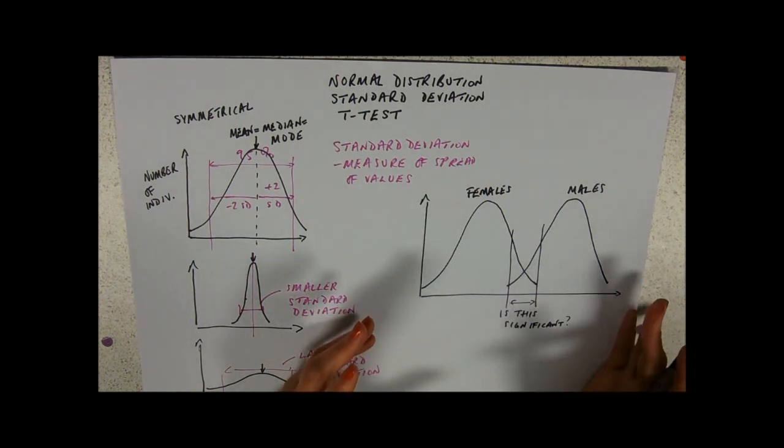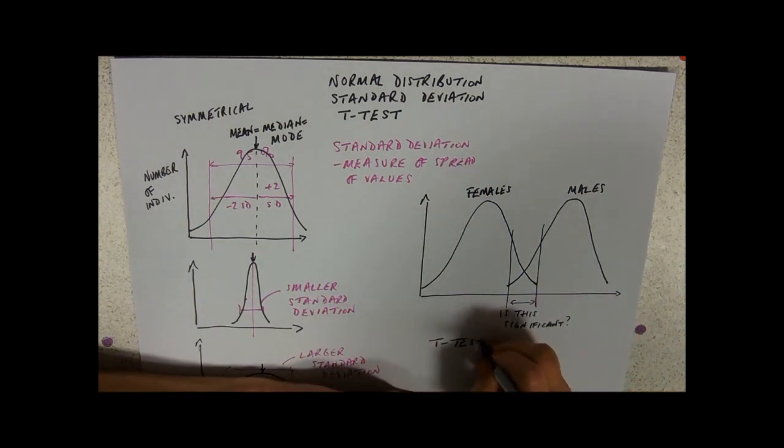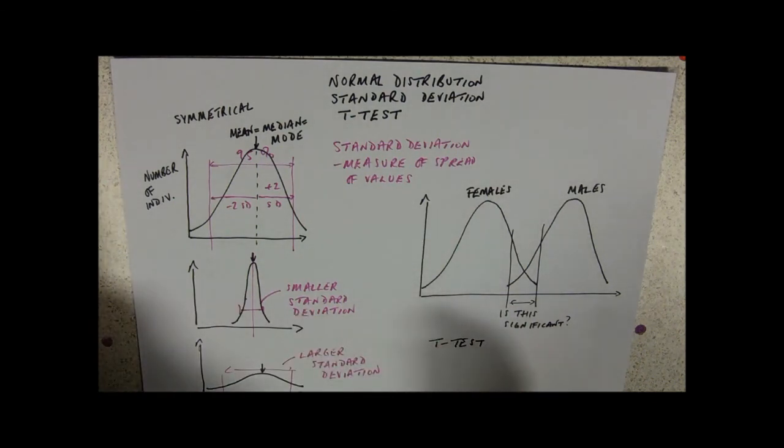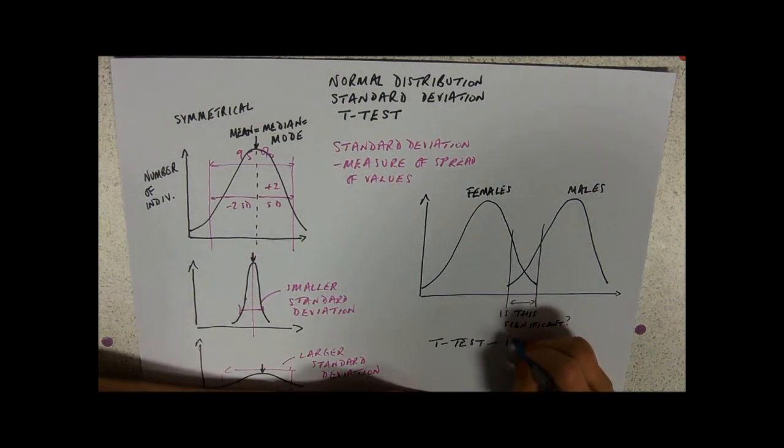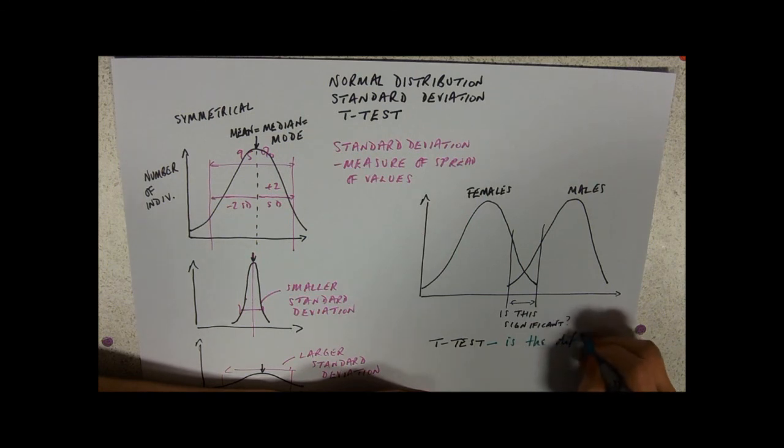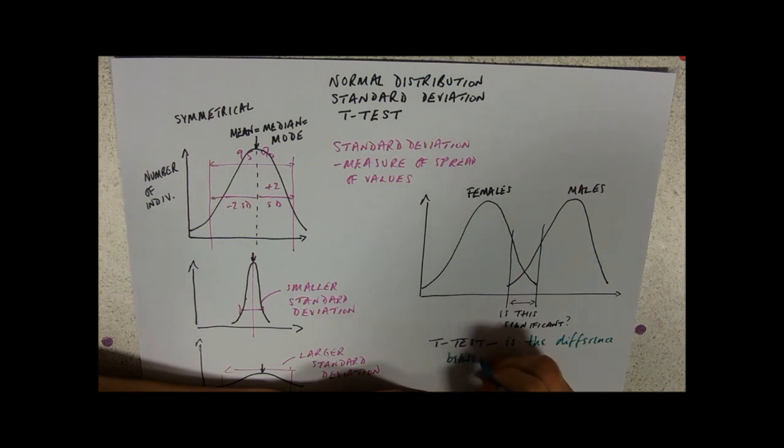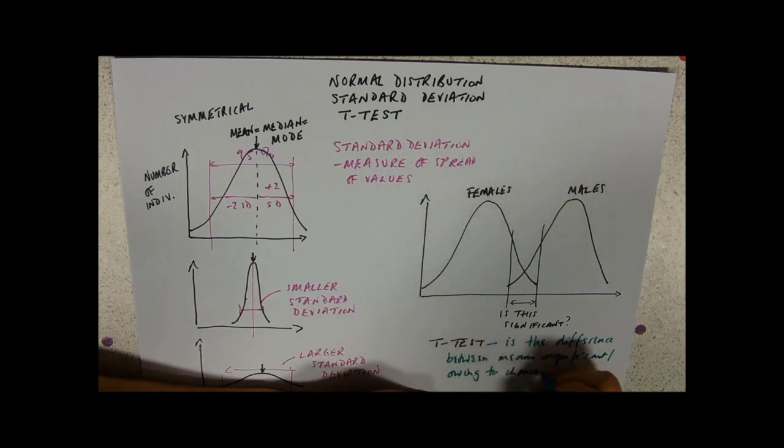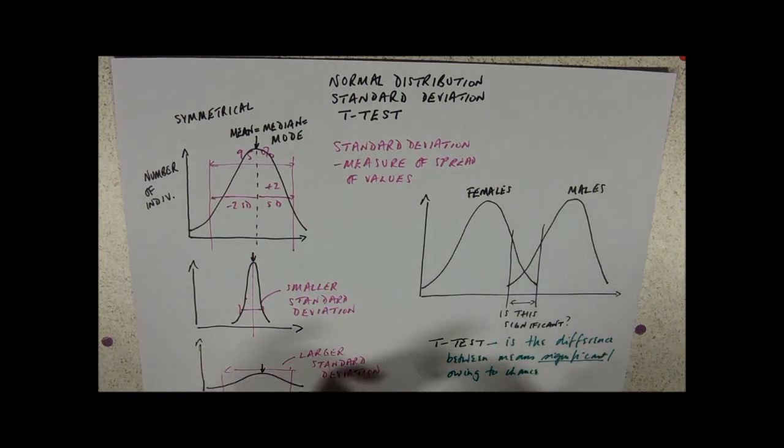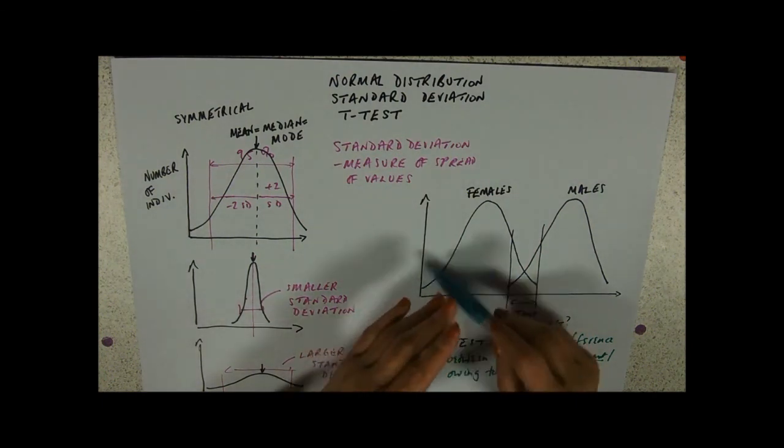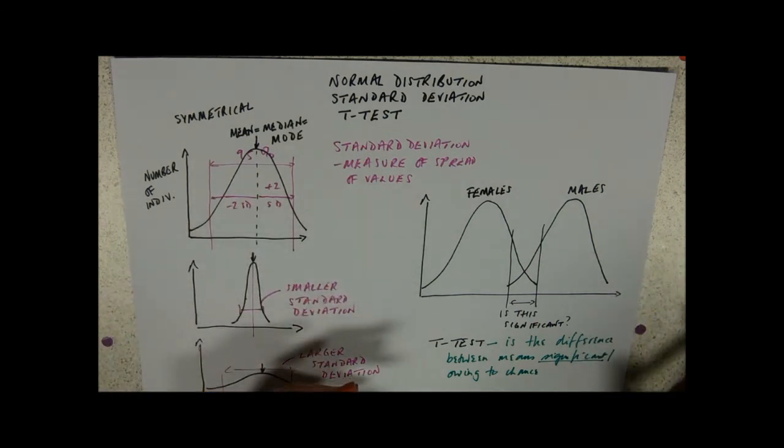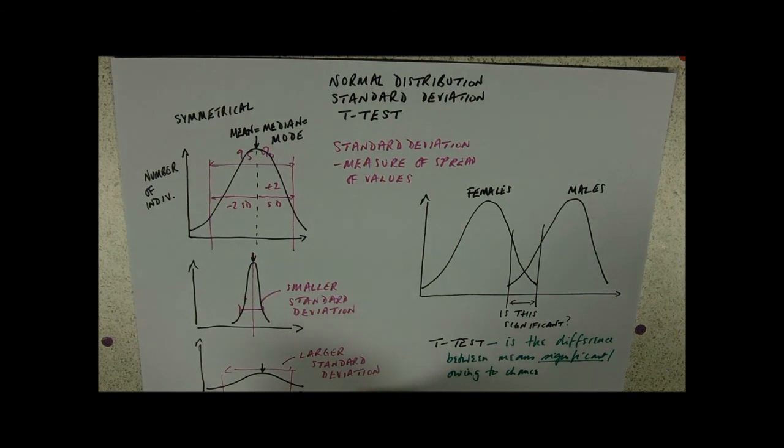So what the t-test takes into account - at the risk of appearing stupid to any mathematicians out there, the t-test is really testing the difference between the means. The question you're asking is: is the difference between the means significant or owing to chance? That word 'significant' is really, really important. The t-test takes into account the spread of the data, the standard deviation, the sample size, and the difference between the means. You don't need to know the formula - you'll be given the formula and a table to put your data in to calculate standard deviation.